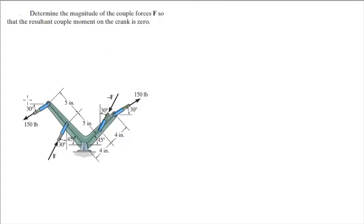The easiest way to do this problem is to divide everything into x and y components. So this 150 has a y component this way and an x component this way. This force right here has a y component going up and an x component going to the right. This one has a y component going this way and an x component going that way, and this 150 over here has a y component going this way and an x component going that way.